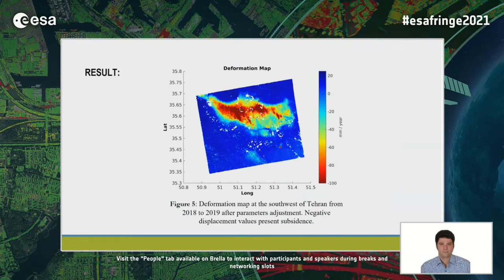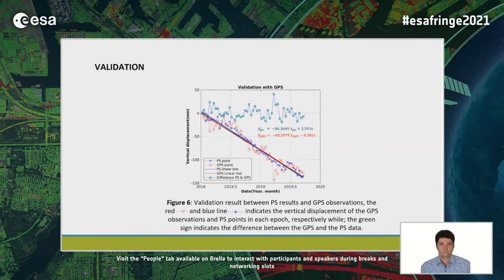This slide shows the deformation map at the southwest of Tehran, where negative displacement values represent subsidence. For validation, the methodology uses a double-difference approach. Because there were no PS points at the location of GPS points, we calculated PS points at the GPS locations by an interpolation method. Then we subtracted two GPS points corresponding to PS acquisition times, and used this same method for the PS points. The red circle and blue star line indicate vertical displacement from GPS observation and PS points at each epoch respectively, and the green line indicates the difference between GPS and PS data.